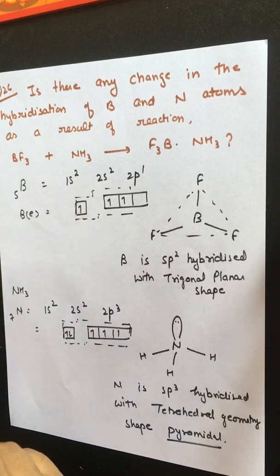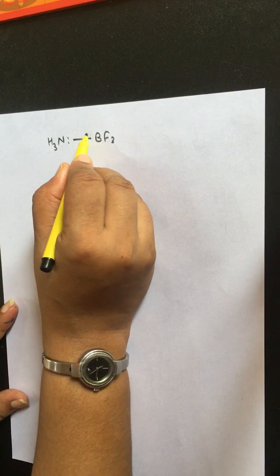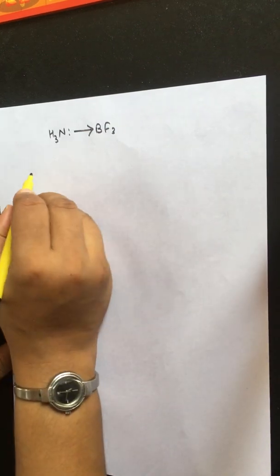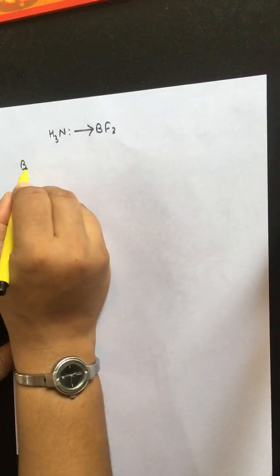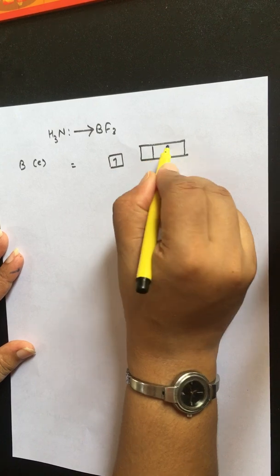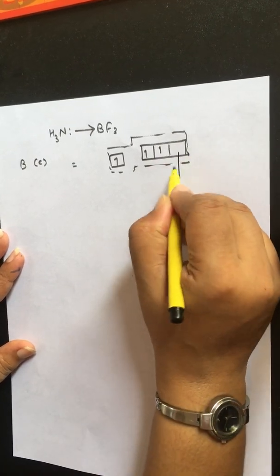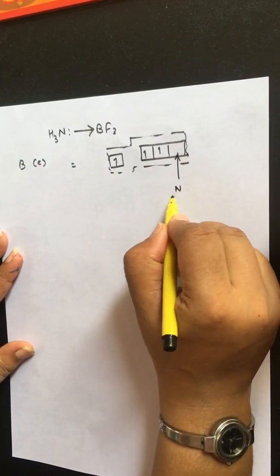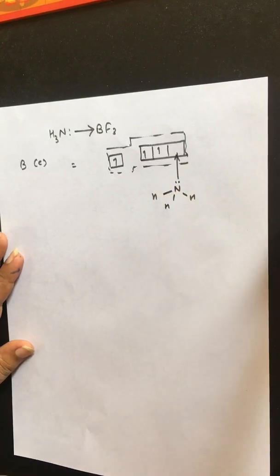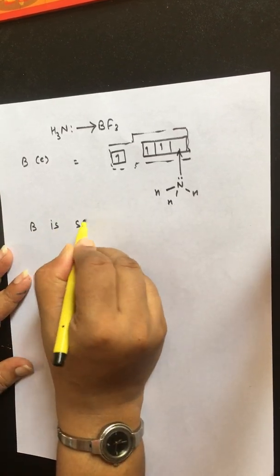NH₃ nitrogen has a lone pair of electrons and BF₃ boron has a vacant orbital, so nitrogen donates this pair of electrons to form coordinate bonding. As a result, boron becomes sp³ hybridized.